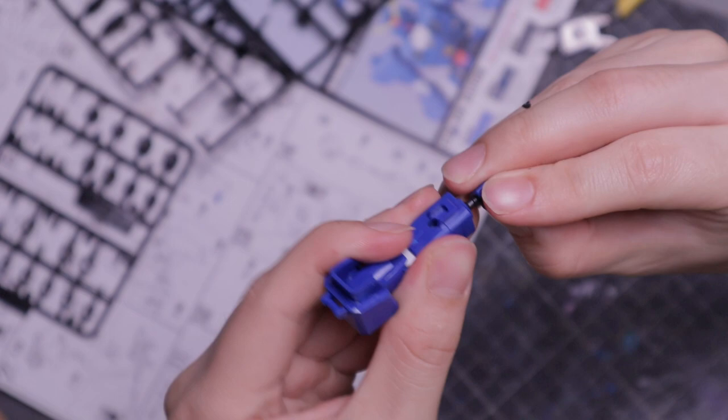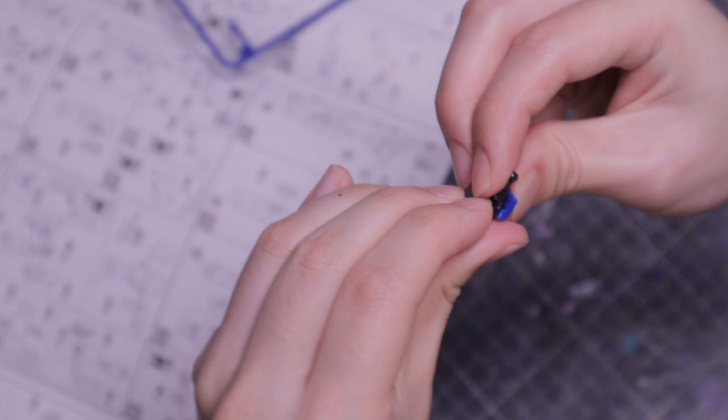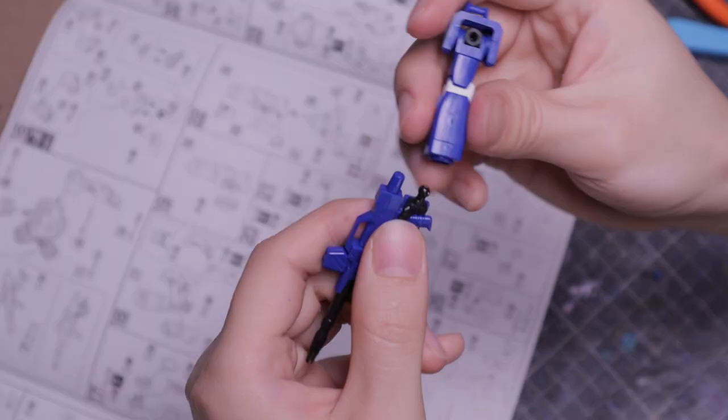Combine E11 and C7 together. Place the beam rifle in the hand and cover up with C6. Then connect the hand to the right arm. Join the right arm to the torso, followed by the left arm. And finally, attach the head to the torso.